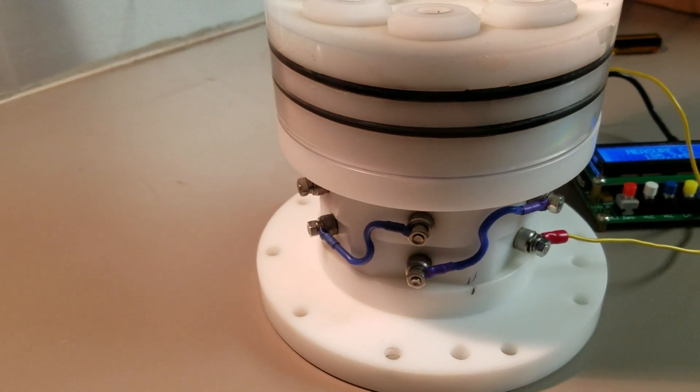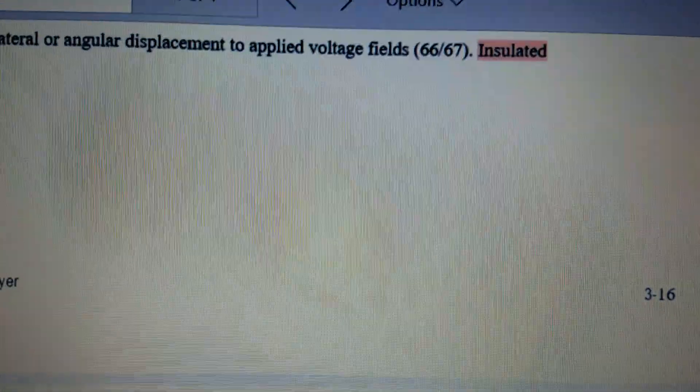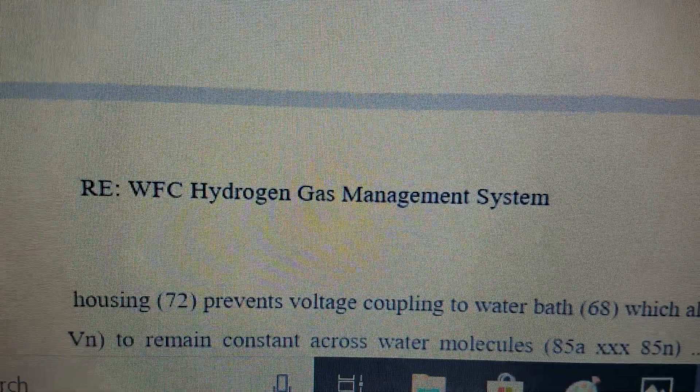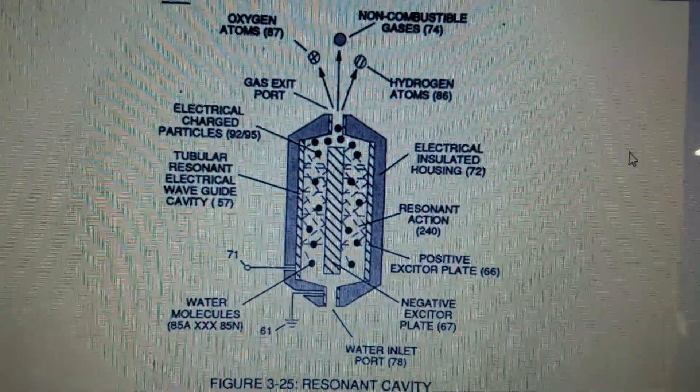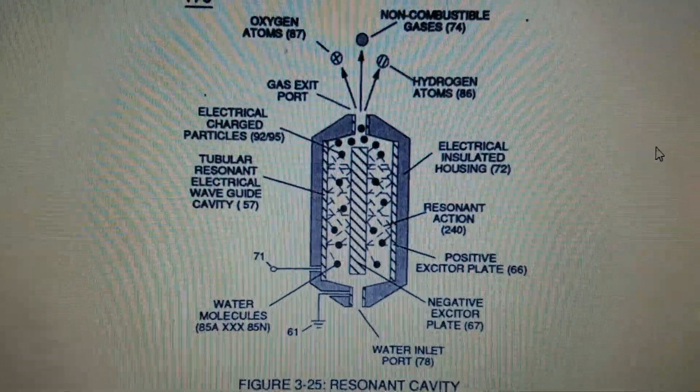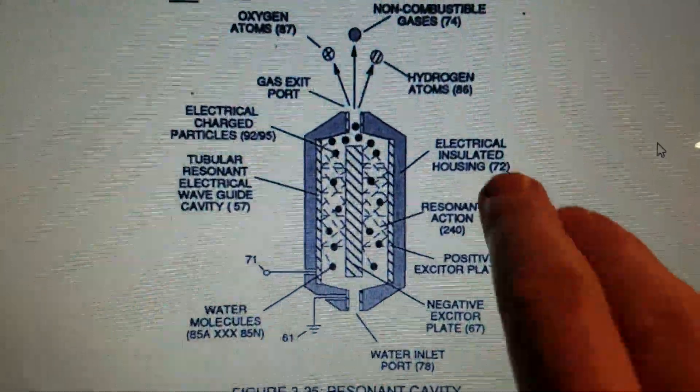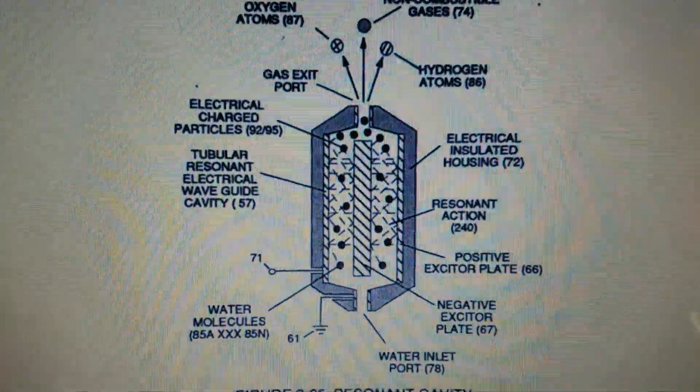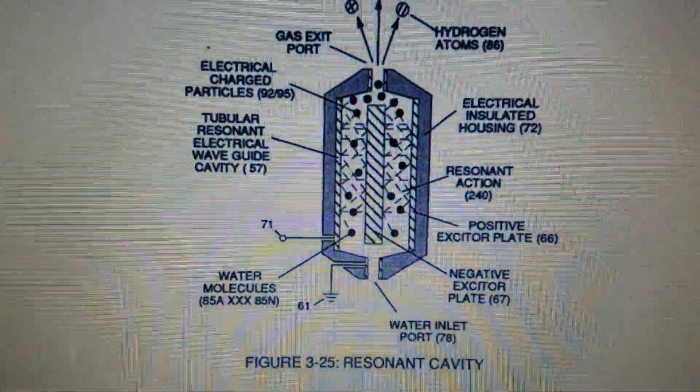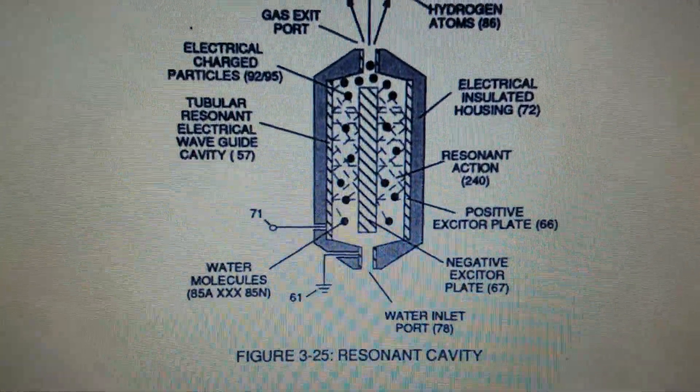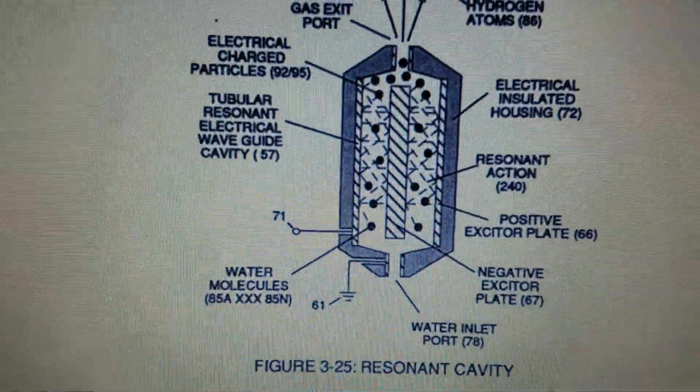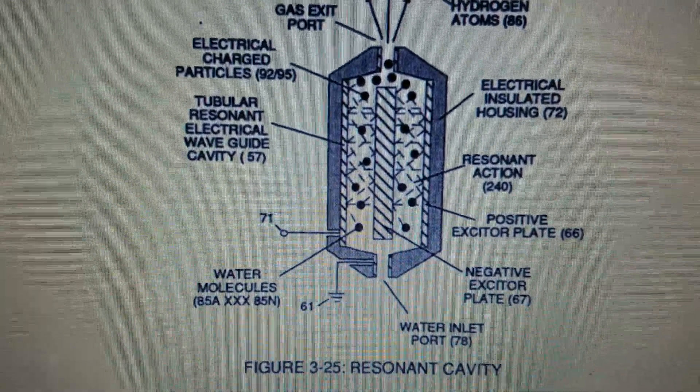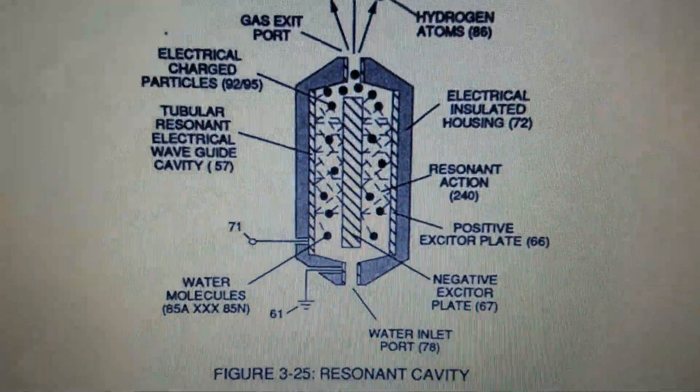So if we go to the tech brief, this is on page 3-16. It says insulated housing 72 prevents voltage coupling to water bath. So there's the drawing you see. 72 electrical insulated housing. And what he's saying is that prevents capacitive coupling of any nearby object. It gives you much more stable capacitance, which allows you to maintain and achieve resonance much easier.